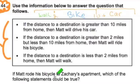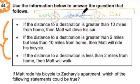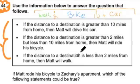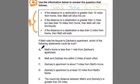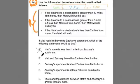Then it says: if Matt rode his bicycle to Zachary's apartment — well, if he rode the bicycle, then doesn't that mean it's got to be between 2 miles and 10 miles? Because that's the range in which Matt rides his bike. So if we know it's between 2 and 10 miles, we can go through these answers with confidence. For example, A says Matt's home is less than 1 mile — that wouldn't be true, because we're looking for something greater than 2 miles. And B, Matt and Zachary live within 2 miles — still not correct, because if it's within 2, he'd be walking. So both of these are wrong.